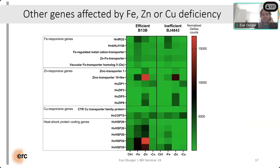We also found some other genes affected by different micronutrient deficiencies: some iron-responsive genes and well-known transcription factors that also reacted under zinc and copper deficiency, though to a lower extent; some zinc-responsive genes from the ZIP family; some copper-responsive genes from the copper family; and also quite interesting, some heat shock protein-coding genes that showed an especially strong expression under zinc deficiency.